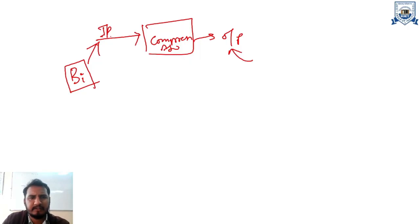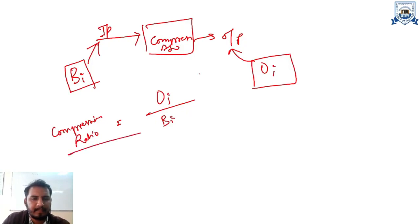And the total number of bits required to represent this output will be O of I. Then this ratio of O of I to B of I, this is called your compression ratio. The ratio of total number of bits needed to represent the output upon the total number of bits needed to represent the input is called as the compression ratio. This is a very important parameter on which we measure the performance of an algorithm.